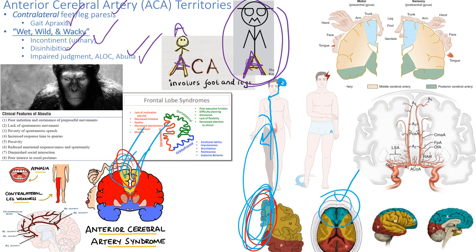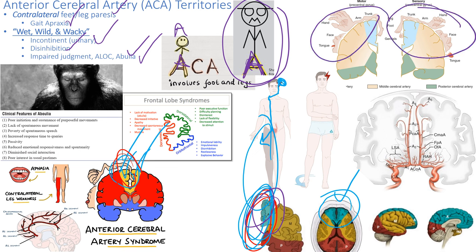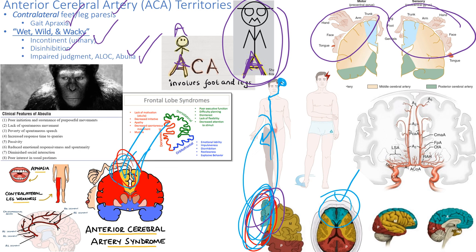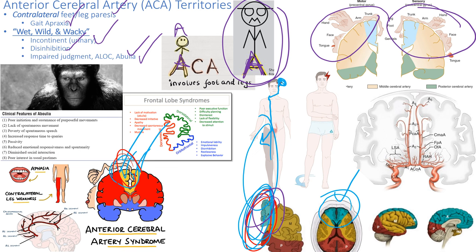What about sensation? Will that be affected? Yes — the ACA doesn't feed just one gyrus, it feeds the whole area here, both the pre-central and post-central gyrus. So it affects the homunculus for sensation and for motor. Can they feel their leg? No — they cannot feel the contralateral leg. That's called paresthesia first, and then maybe anesthesia next. So that's the anterior cerebral artery — an ACA stroke, whether ischemic or hemorrhagic, leads to wet, wild, and wacky findings: incontinent, abulic, impaired gait, and contralateral leg unable to feel or move.